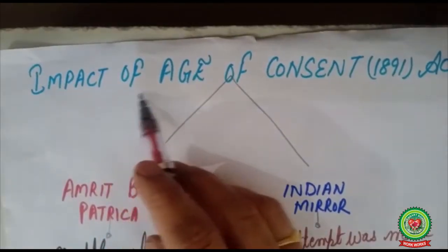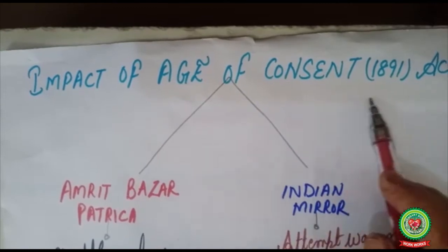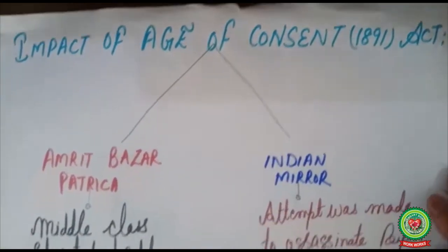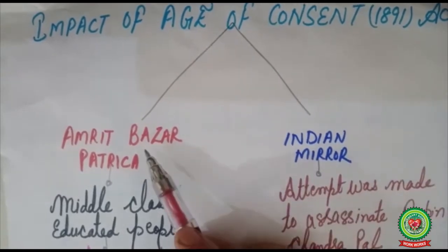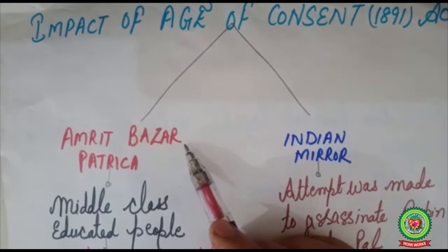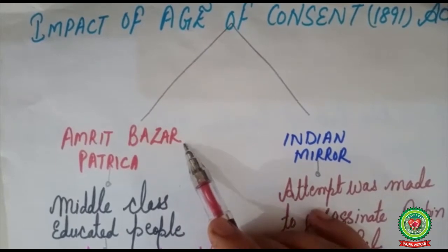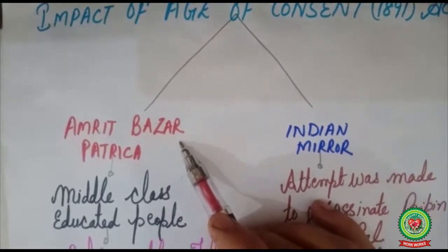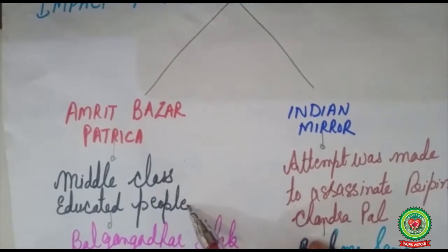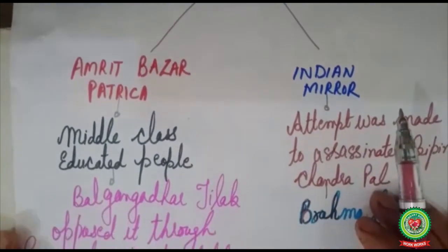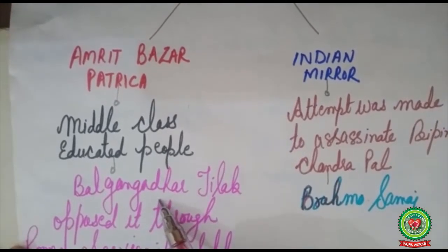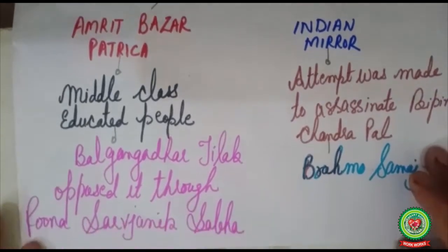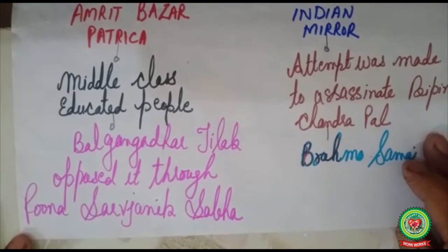The Age of Consent Bill had a mixed reaction in India. Amrit Bazar Patrika, a vernacular newspaper in Bengali, criticized the bill. Even the middle-class educated people of Bengal also criticized it. Our well-known freedom fighter and assertive leader Bal Gangadhar Tilak also opposed this bill through his Puna Sarvajanik Sabha.